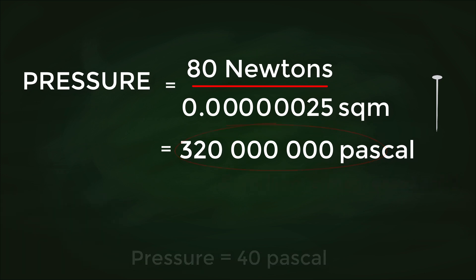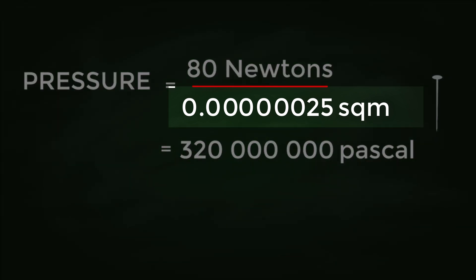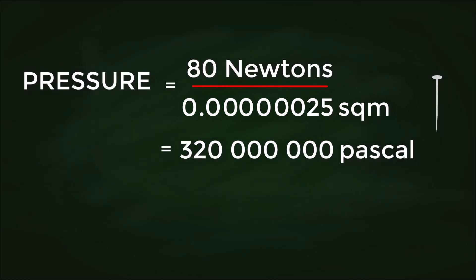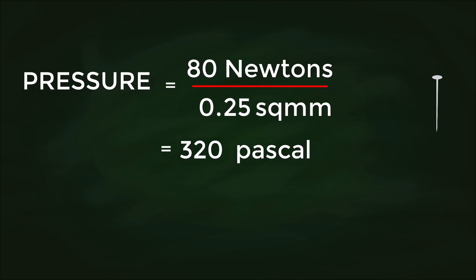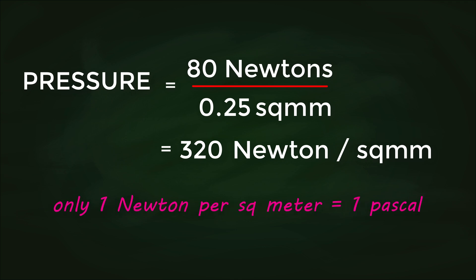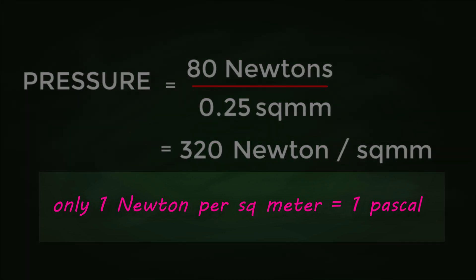Now you may be wondering, why did we use square meters as our unit here if the area is so small? You could use other units like square millimeters and say that the area is, for example, 0.25 square millimeters. If you put that into your calculation, that's no problem—you just need to remember that the answer would be newtons per square millimeter, and that's not the same as a pascal. Only one newton per square meter equals one pascal.